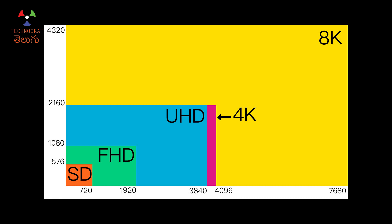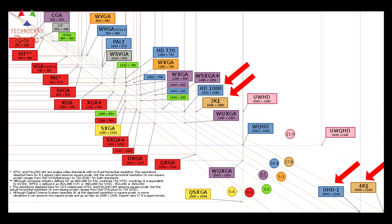For 4K, the width is 4,096 pixels, so there is a big difference. Comparing 2K and 4K, there is a lot of difference in detail. The UHD has a 16:9 aspect ratio, while the true 4K cinema standard uses a 17:9 aspect ratio. Ultra HD screen is 4K UHD video.